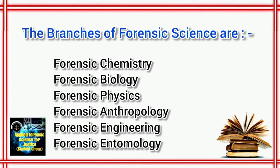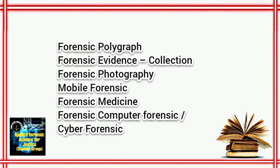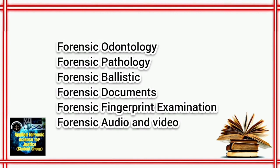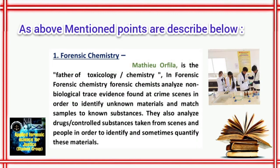The branches of Forensic Science covered are: Forensic Chemistry, Forensic Biology, Forensic Physics, Forensic Anthropometry, Forensic Engineering, Forensic Entomology, Forensic Polygraph, Forensic Evidence Collection, Forensic Photography, Mobile Forensic, Forensic Medicine, Cyber Forensic, Forensic Odontology, Forensic Pathology, Forensic Ballistics, Forensic Document, Forensic Fingerprint Examination, and Forensic Audio and Video Examination. These mentioned points are described below.